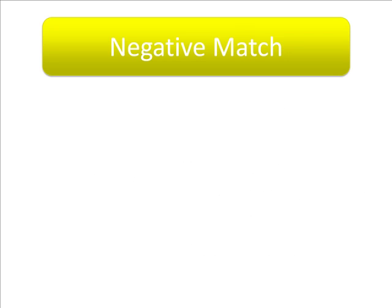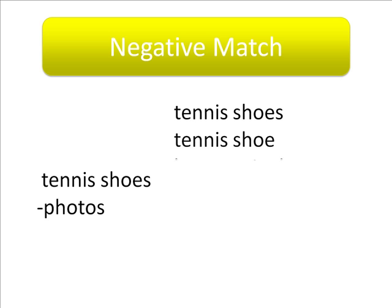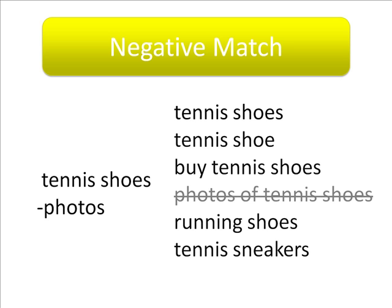Another keyword match type to consider is a negative match. This ensures that your ad doesn't show for any search that includes that term, and it's used in collaboration with other match types. For example, with the keyword tennis shoes and the negative match photos, we'll still match out your keyword to tennis shoes and tennis shoe, but any phrase with the word photos in it will be excluded.